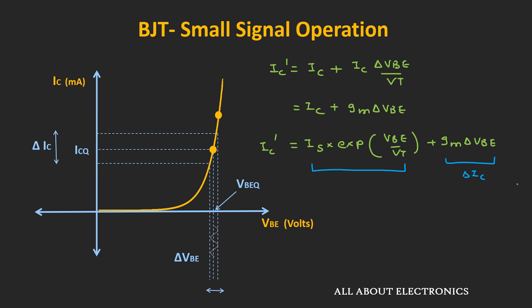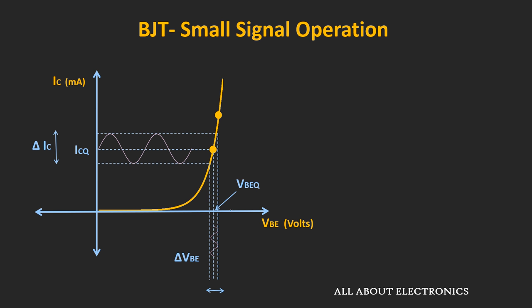By using the small signal approximation, we apply superposition: during DC analysis, we consider all AC sources as zero to find the DC operating point, and then during AC analysis we find the AC response. The total response is the summation of the individual responses. For example, we find the required collector current for biasing using DC analysis, and then using small signal analysis we find the change in collector current.